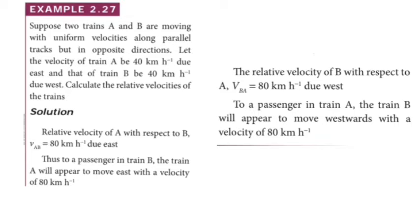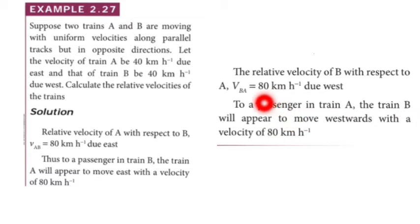So we add the two velocities. The answer is 80 km per hour due east direction. For the second case, relative velocity of train B with respect to A — the magnitude of velocity will be same but direction will be opposite.